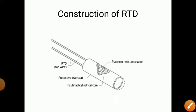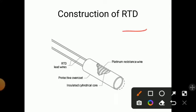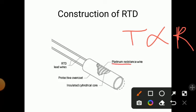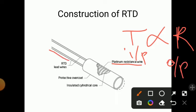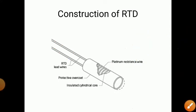The principle of RTD is: as temperature increases, resistance also increases — temperature is directly proportional to resistance. The platinum wire has an initial resistance of around 100 ohm or 120 ohm. As temperature increases, this resistance also increases. Input is temperature change and output is change in resistance, measured between the two lead wires.